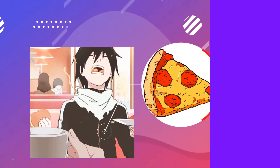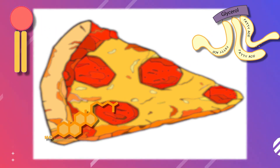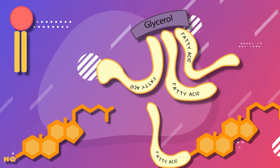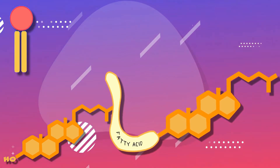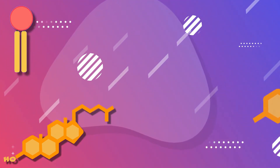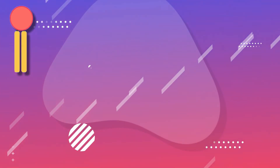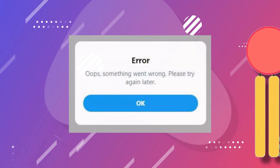The fats in our diet consist mainly of triglycerides, phospholipids, cholesterol, and cholesterol esters. Our body breaks these down into their constituent parts and then absorbs them. Triglycerides are broken down into glycerol and three fatty acid molecules. Cholesterol esters are broken down into cholesterol and a molecule of fatty acids, and cholesterol doesn't need to be broken down. The digestion of phospholipids is slightly complex.